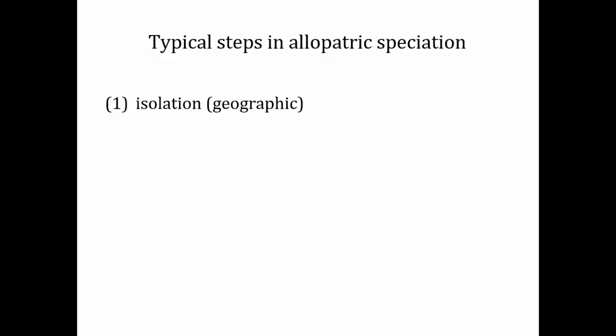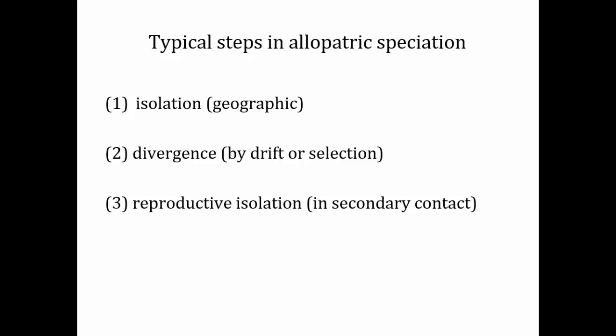Here are some of the typical steps in allopatric speciation. First, there's got to be some isolation geographically. Then there has to be a lot of time, and during that time there's divergence. Typically we think of selection being a really strong force in leading to divergence, but especially if a new population is founded on an island, drift can have a really important role. It's believed that drift is the more important factor leading to divergence in isolated populations. Finally, reproductive isolation gets achieved, so once these populations come back into secondary contact they are no longer able to produce viable offspring.